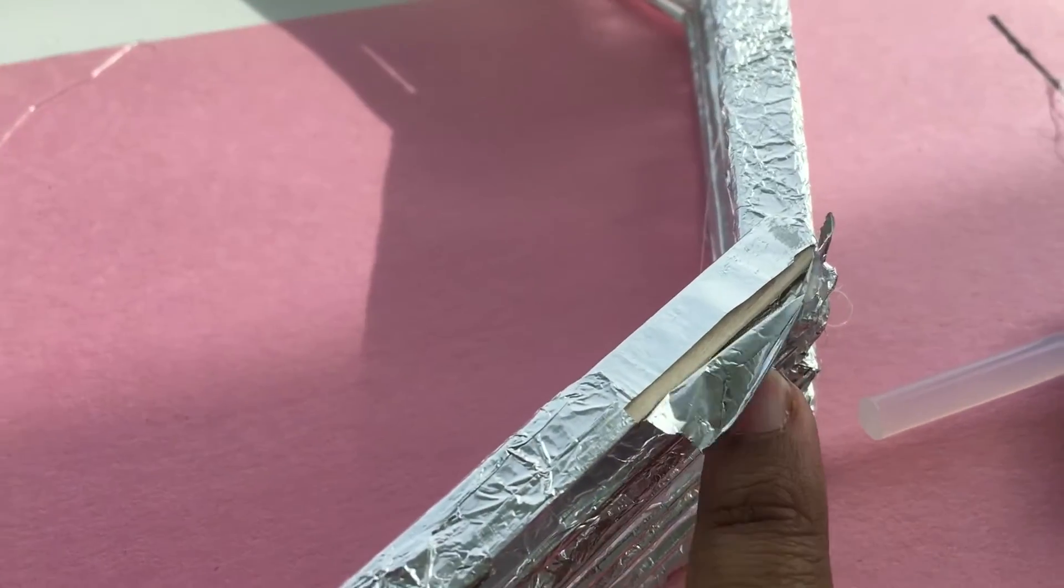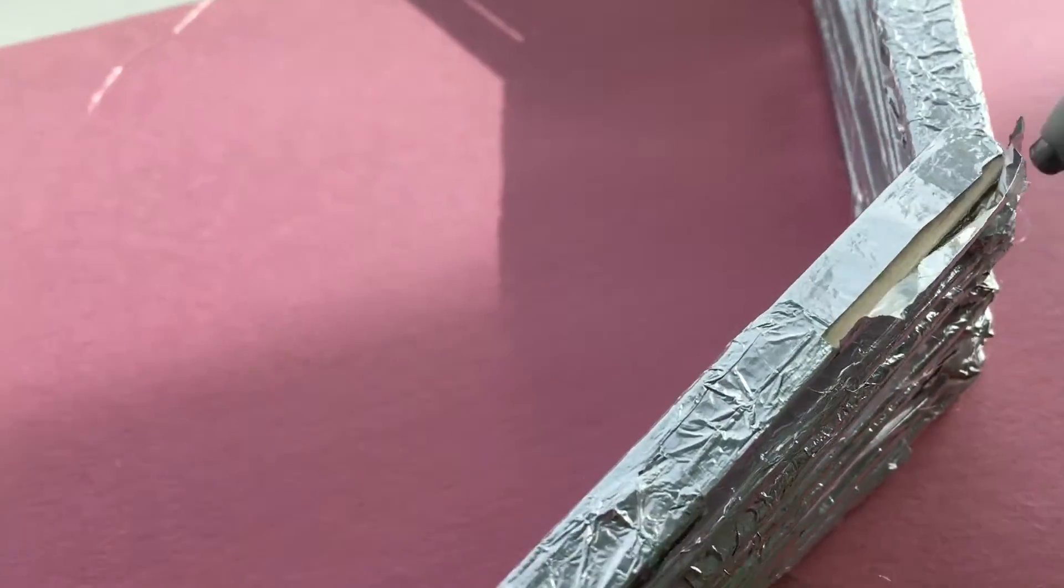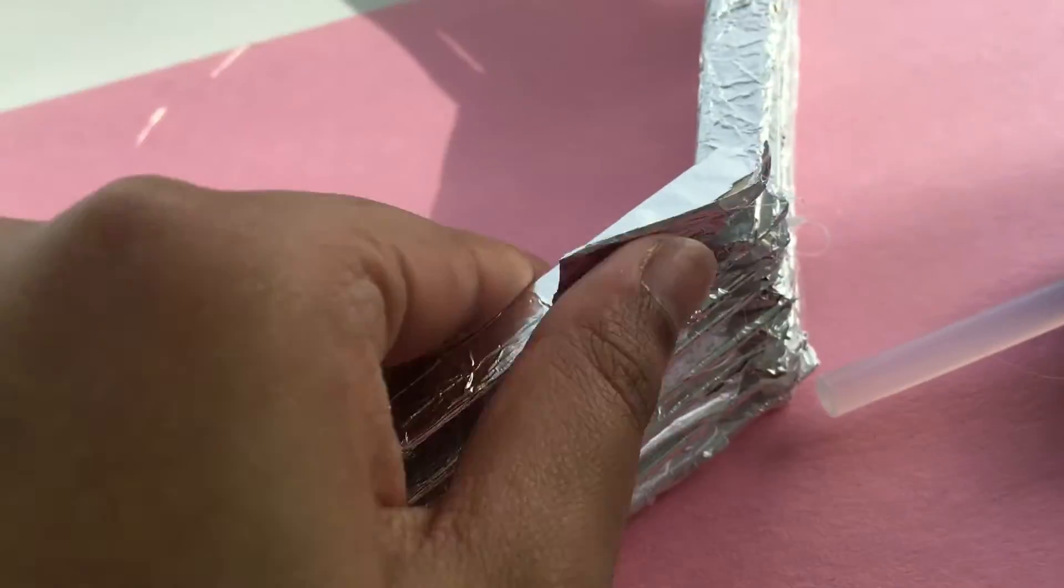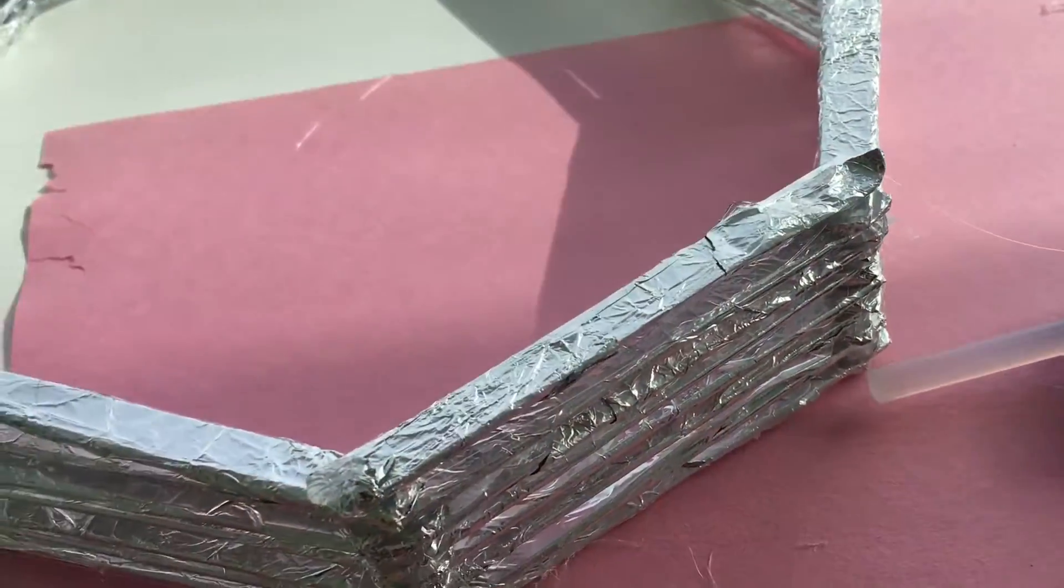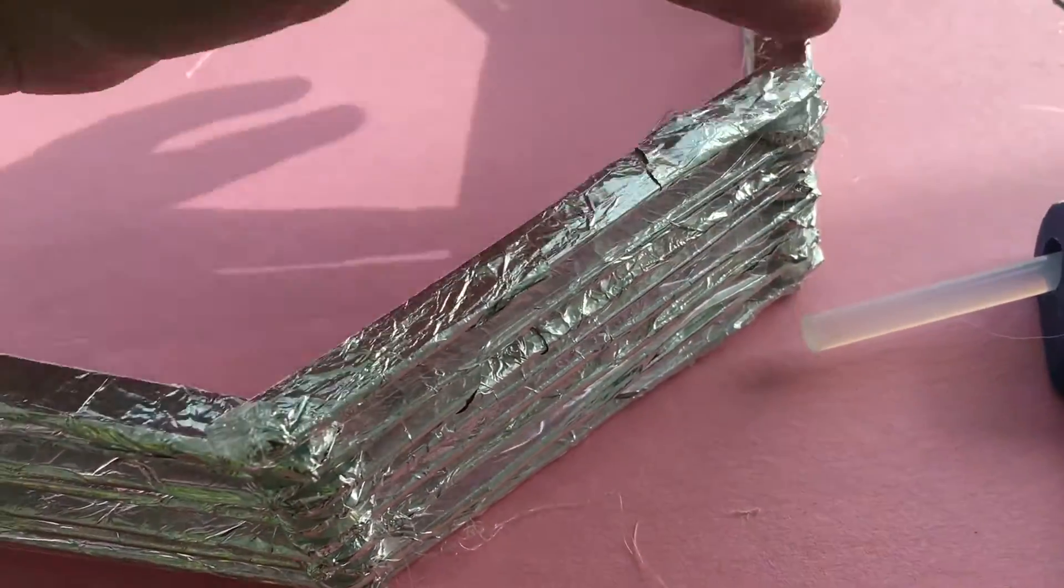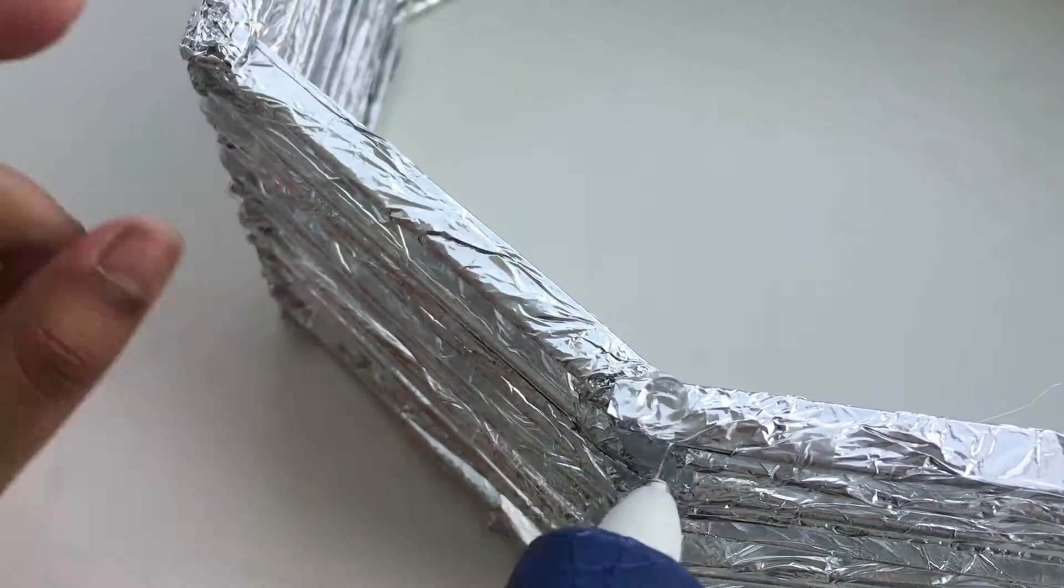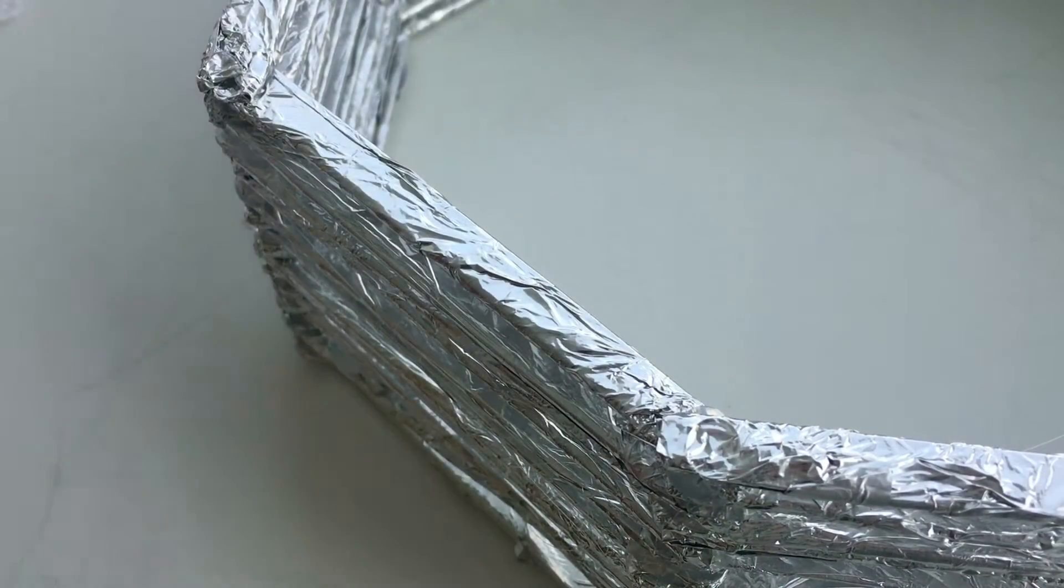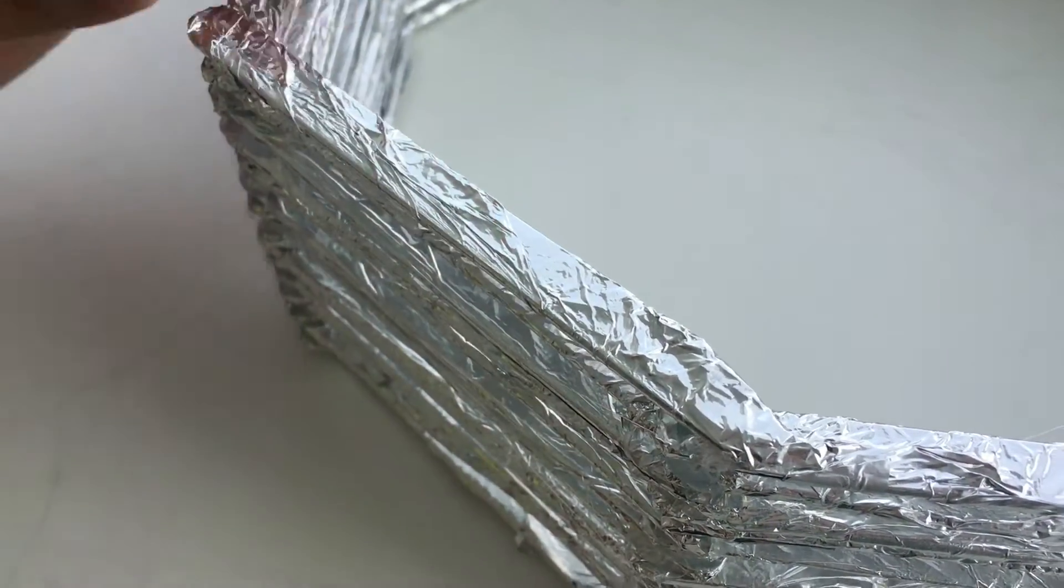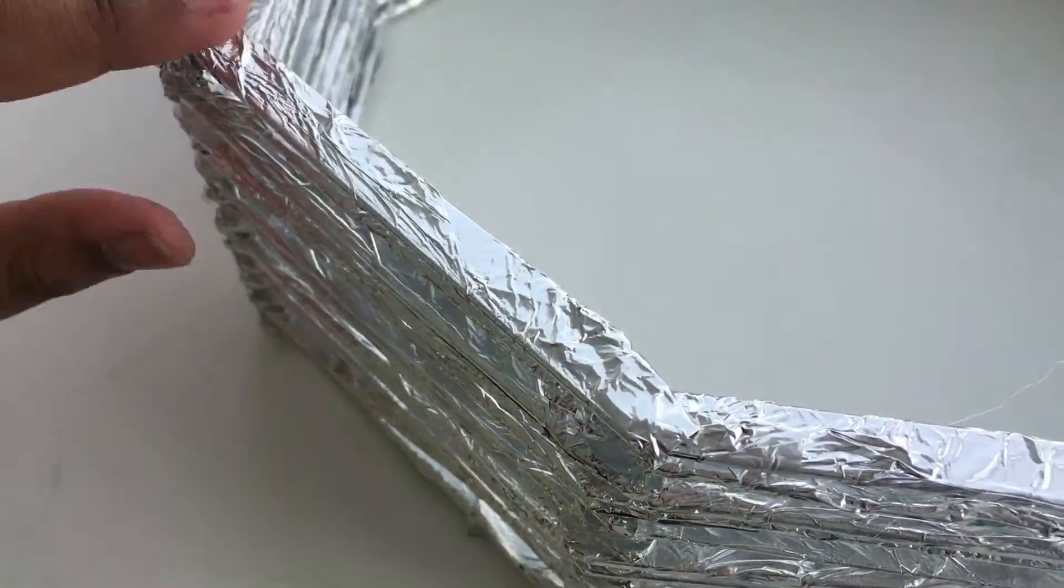In case a little bit of aluminum foil comes off from the stick, just hot glue it back to its position. I needed 12 layers of sticks, so that means 96 popsicle sticks in total.